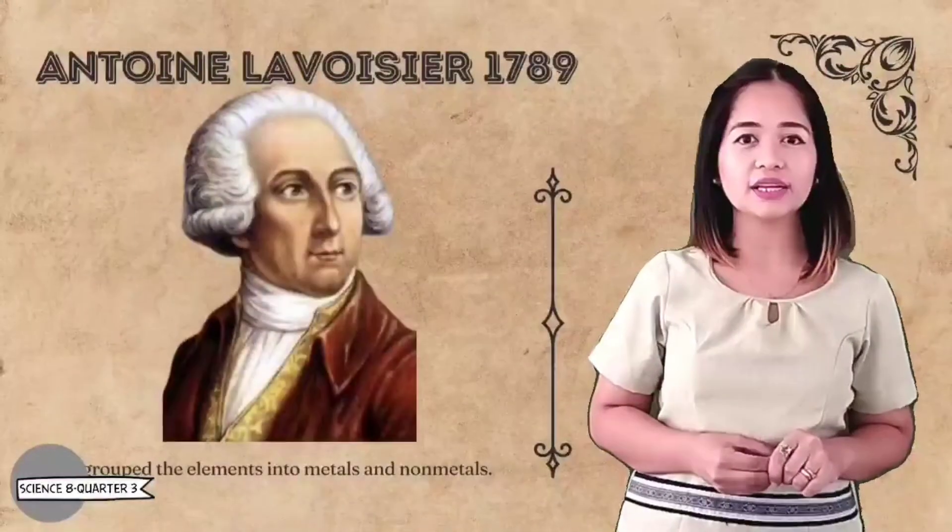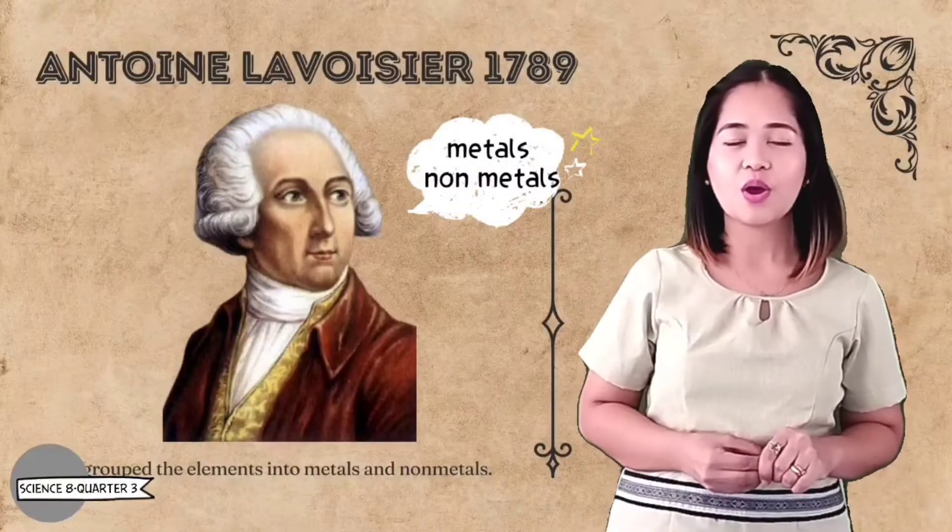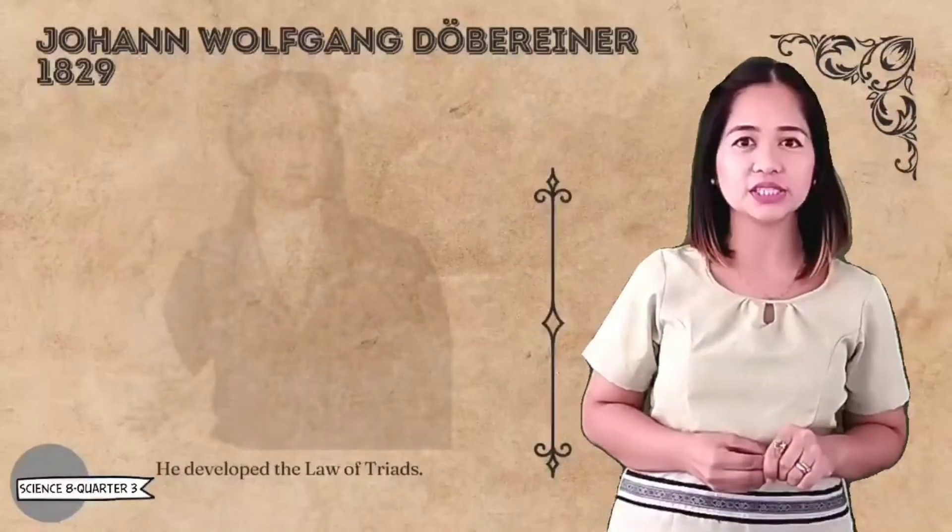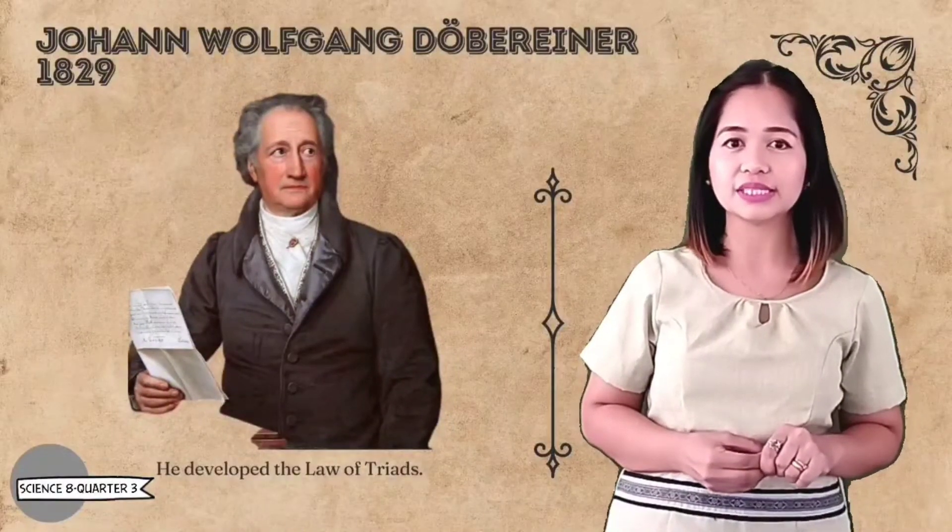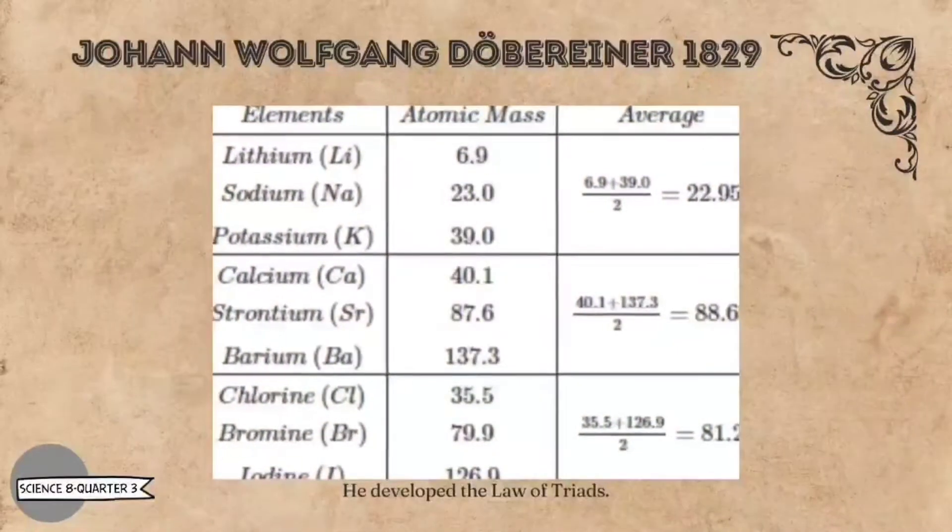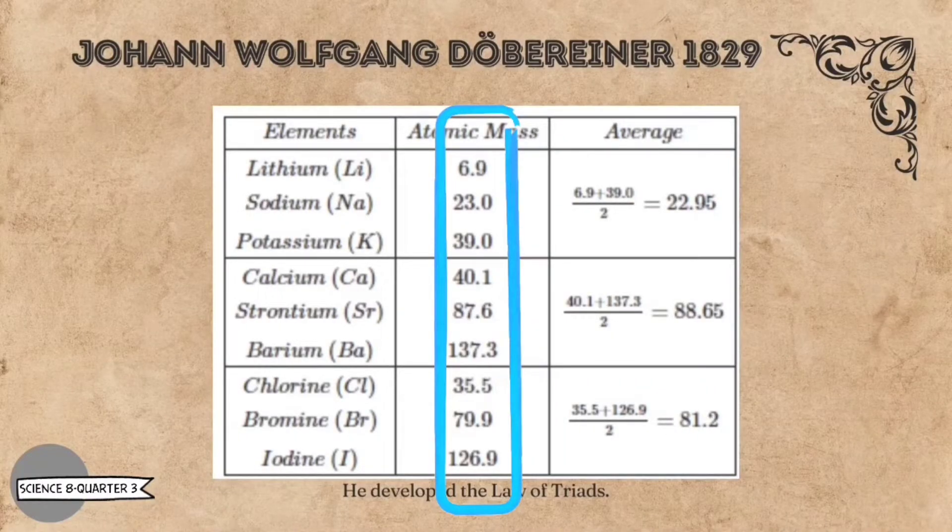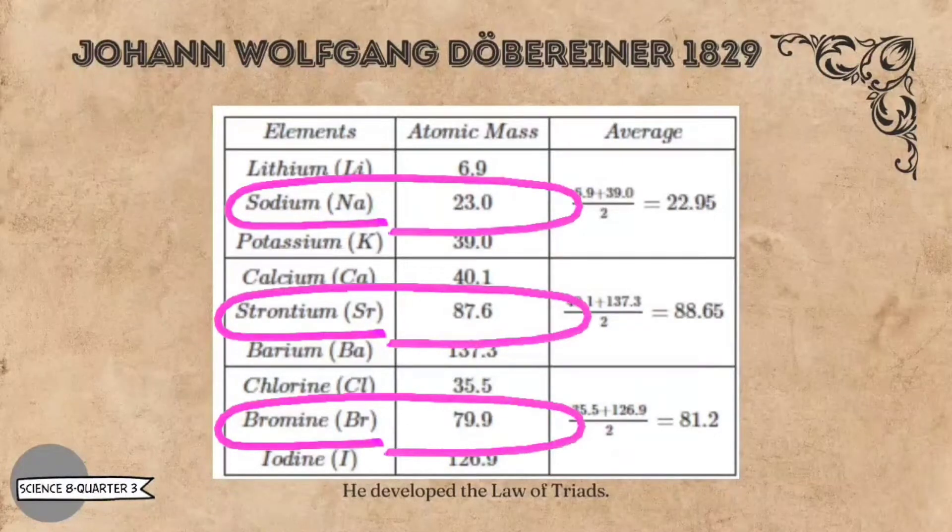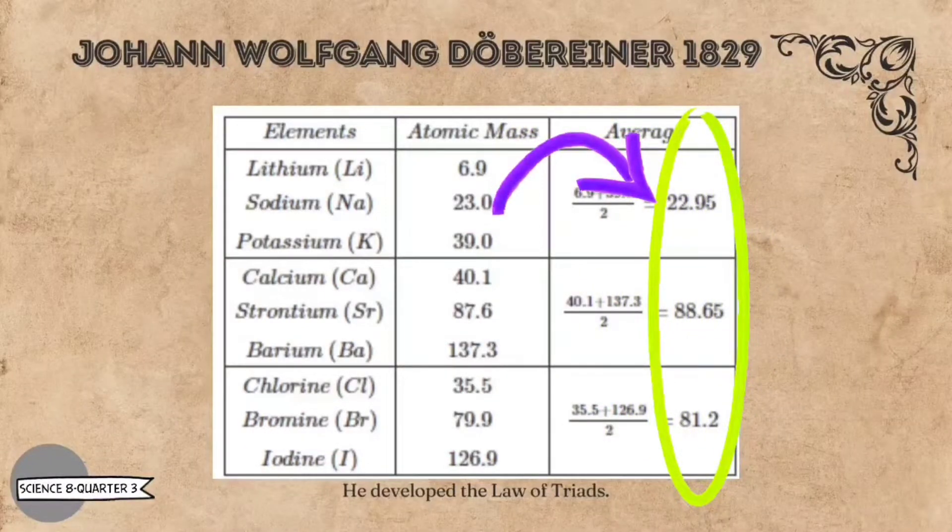Forty years later, German physicist Johan Wolfgang Dobereiner observed similarities in physical and chemical properties of certain elements. He arranged them in groups of three in increasing order of atomic weight and called them triads, observing that some properties of the middle elements such as atomic weight and density approximated the average value of these properties in the other two in each triad.